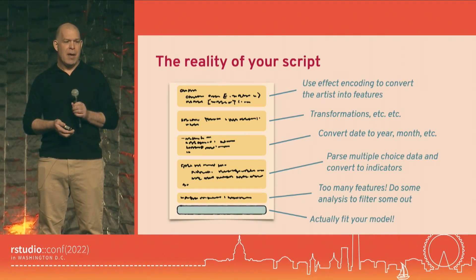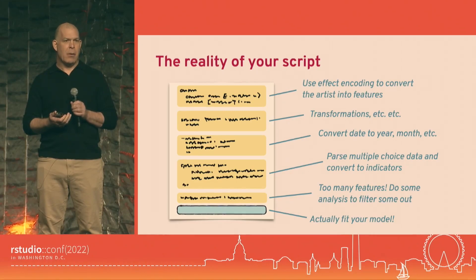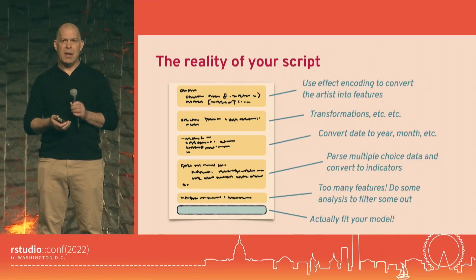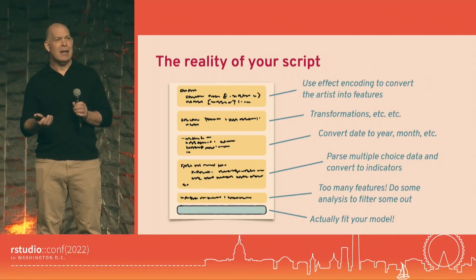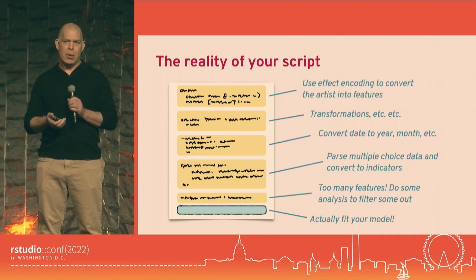A lot of this is about data preprocessing. At the top we might use a technique called effect encoding to handle the large number of artists — that requires some statistical estimation of the effect of each artist. You might use lubridate commands, wday and all that, to make date features you put in your model. And there's code to parse the multiple-choice field.